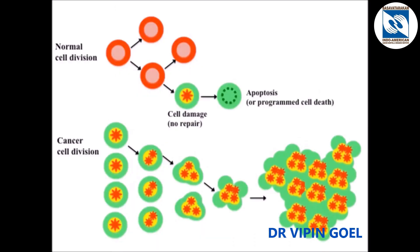Normally, cell division takes place in a controlled fashion. Red cells are the normal cells. Sometimes if the cell is damaged, either it is repaired or it is killed. Here the green cells are the damaged cells. But if the damaged cell is not repaired or it is not killed, it goes on multiplying, forming cancer.